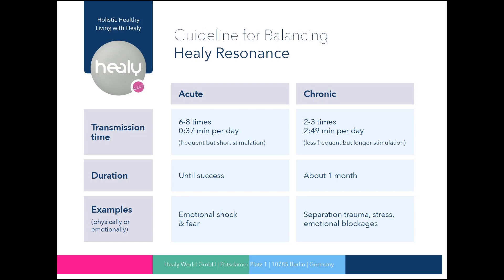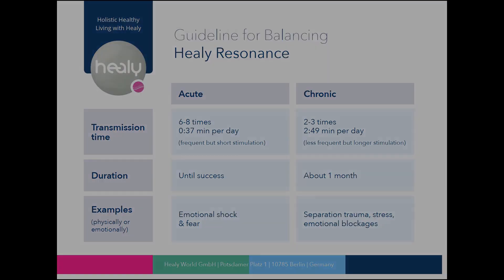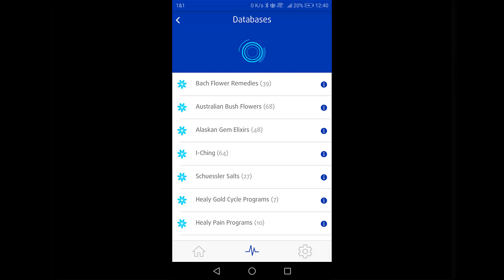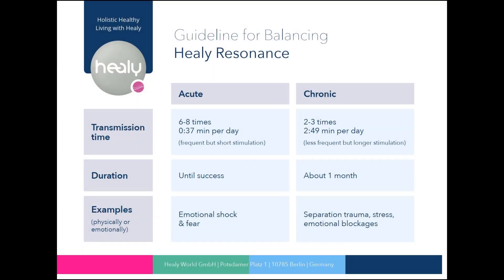Continue trying other databases within the Resonance module or a new list from the Aura module. At this point, I would like to suggest you familiarize yourself with the effects of Bach flowers, Australian bush flowers, gem elixirs, or Schussler salts. Some examples I have given are unresolved separation traumas dragging on over a longer period of time, long-lasting stress, and emotional blockages.